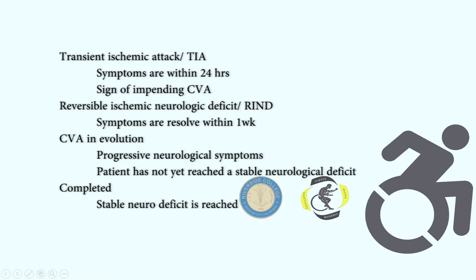Third is stroke in evolution, in which there are progressive neurological symptoms and the patient has not yet reached his or her stable neurological deficit. And lastly, the completed stroke, in which the patient presents with a series of impairments due to stroke.